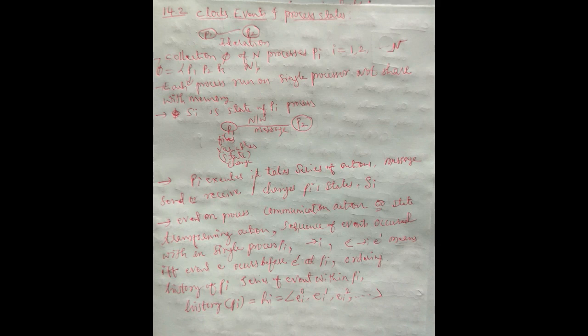The history of pi means the series of events within pi. The history of pi is represented as: hi = {ei0, ei1, ei2, ..., ein}, representing the 0th event, 1st event, 2nd event, up to the nth event occurring in that process.